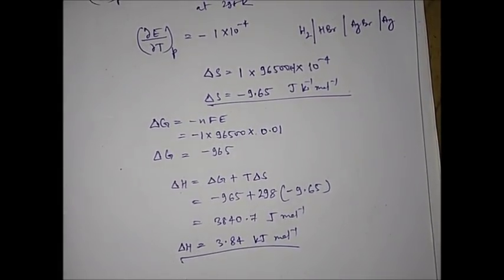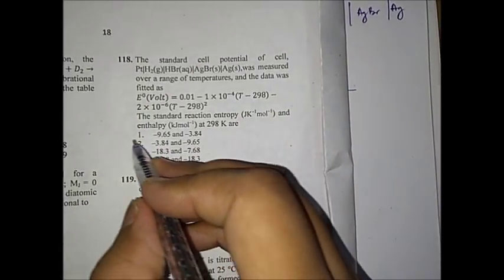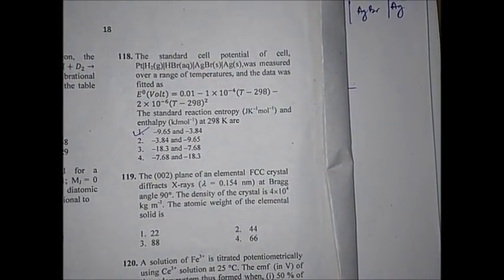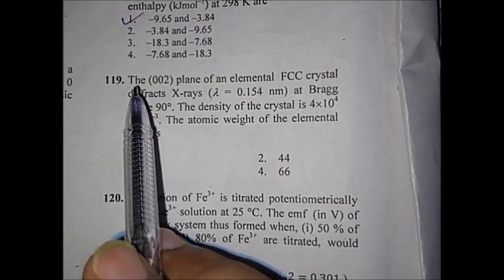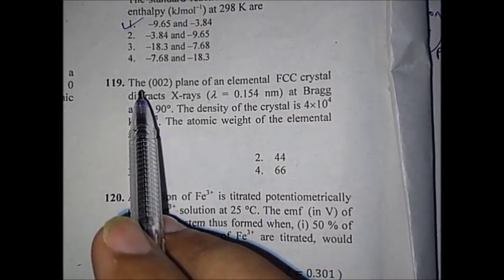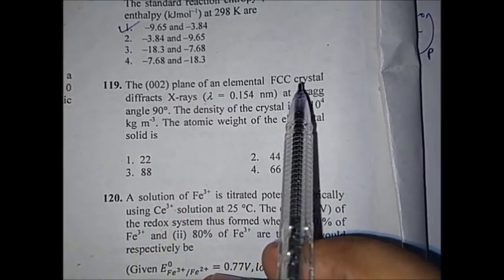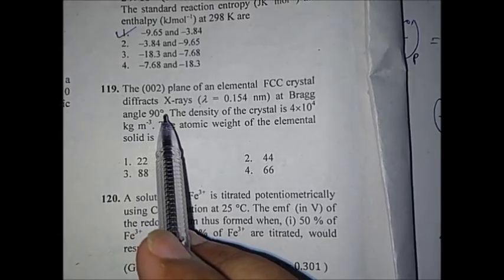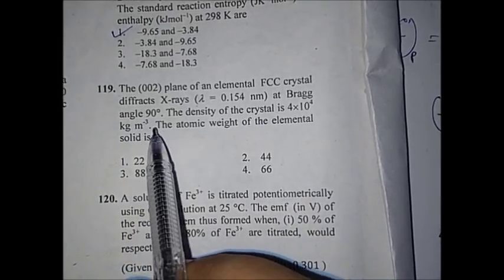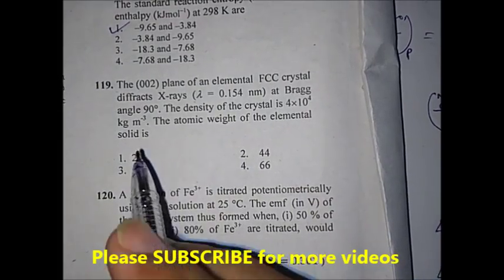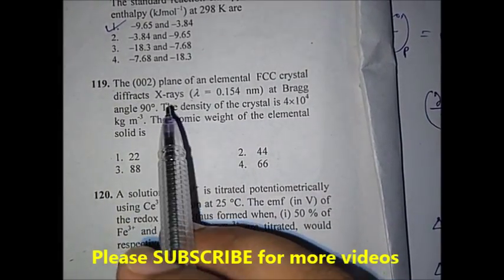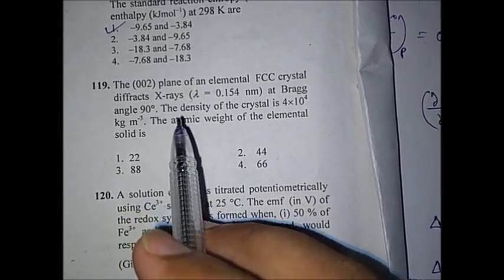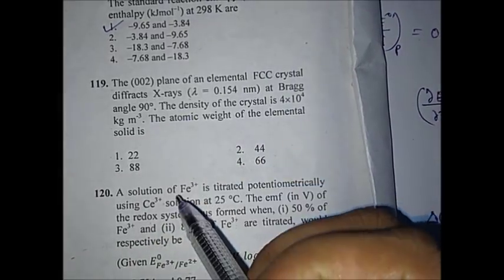So both ΔS and ΔH are calculated, and the correct option for this question is option number one. Now let's move to the next question from solid state. The question says that the (002) plane of an elemental FCC crystal diffracts X-rays with wavelength λ = 0.154 nm at Bragg's angle θ = 90°, and the density is 4×10⁴ kg/m³. You have to calculate the atomic weight.